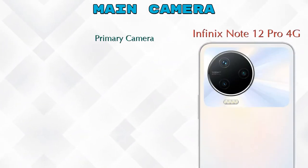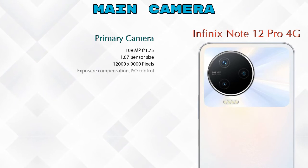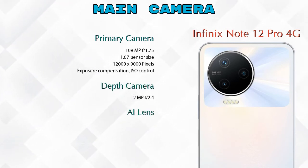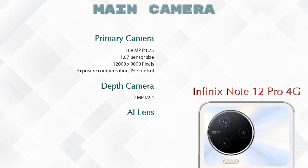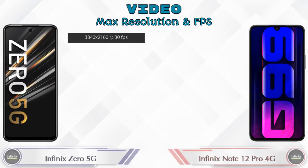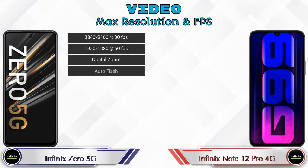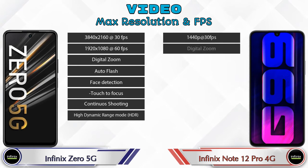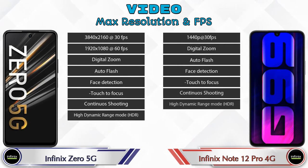The Note 12 Pro 4G also has three cameras: a primary camera, a depth camera, and an AI lens. If we talk about video camera features, the Zero 5G has 8 and the Note 12 Pro 4G has 7 different types of features available.